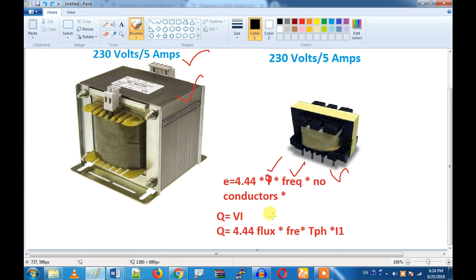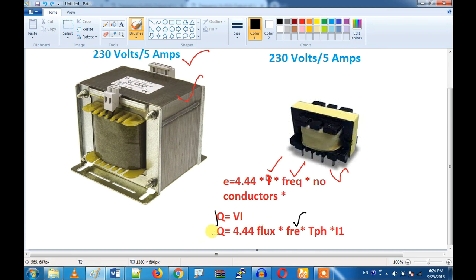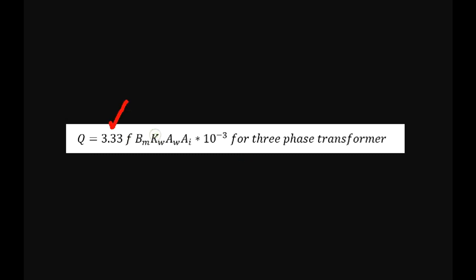We may change the number of conductors, and we may change the number of fluxes in the design. What we can do is vary the frequency. Q is directly proportional to frequency. So if we increase the frequency, we can reduce the number of conductors. This allows us to increase the design area. For a 3-phase transformer example, let me call this a design form.